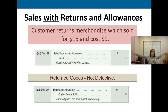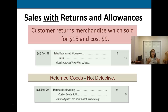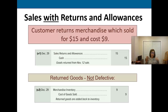You might ask why we can't just reverse the sale. The answer is that as a business owner, manager, or shareholder, you want to keep a really close eye on those returns and allowances, because if that number gets too high it should be a real warning sign that something's going on. Too many returns, too many allowances given for defective stuff, should be a red flag. Because of that, we track sales returns and allowances separately.